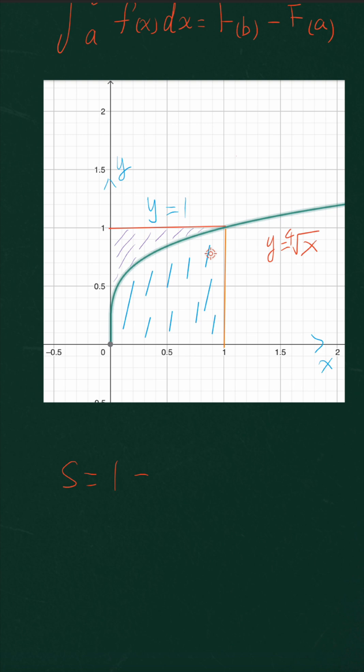minus the area of the curve, which actually is a definite integral of this function from 0 to 1. So integral from 0 to 1 of the function, the fourth root of x, with respect to x. And let's just calculate this a little bit.